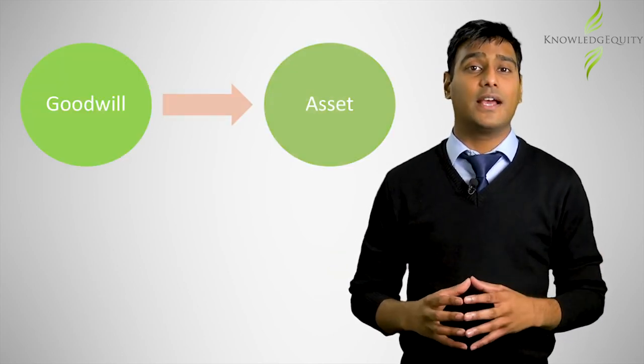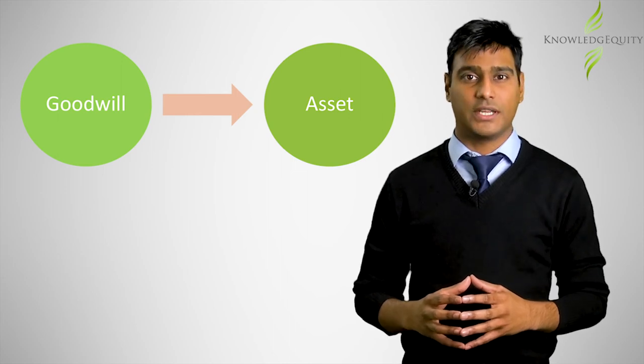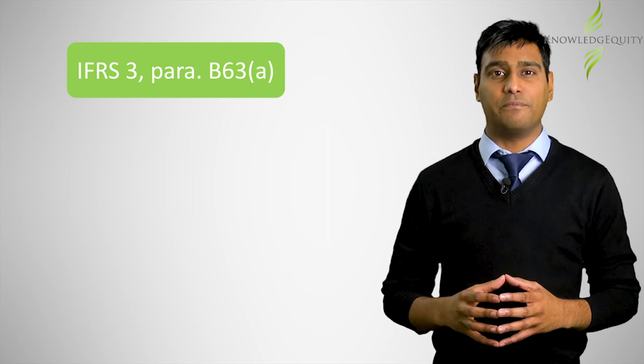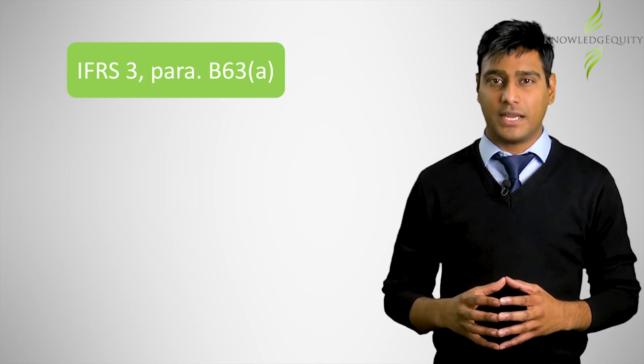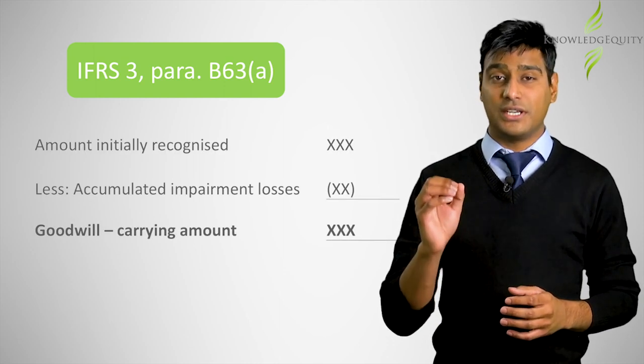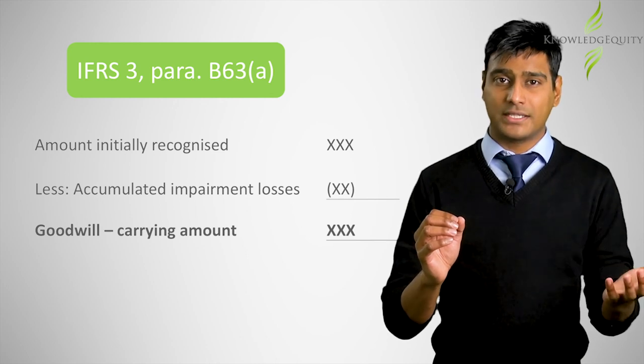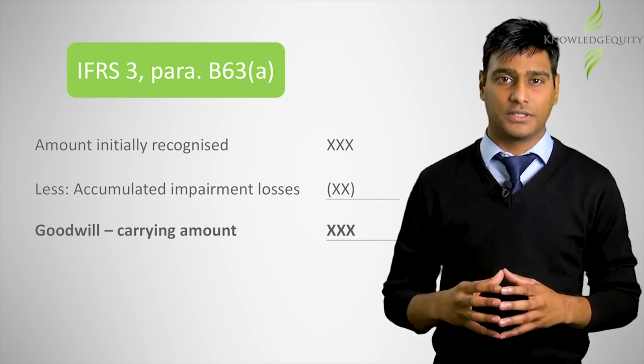Goodwill is recognized as an asset at the acquisition date, so we need to consider how goodwill is measured in subsequent years after initial recognition. IFRS 3 paragraph 63a requires it to be measured as the amount initially recognized minus accumulated impairment losses.